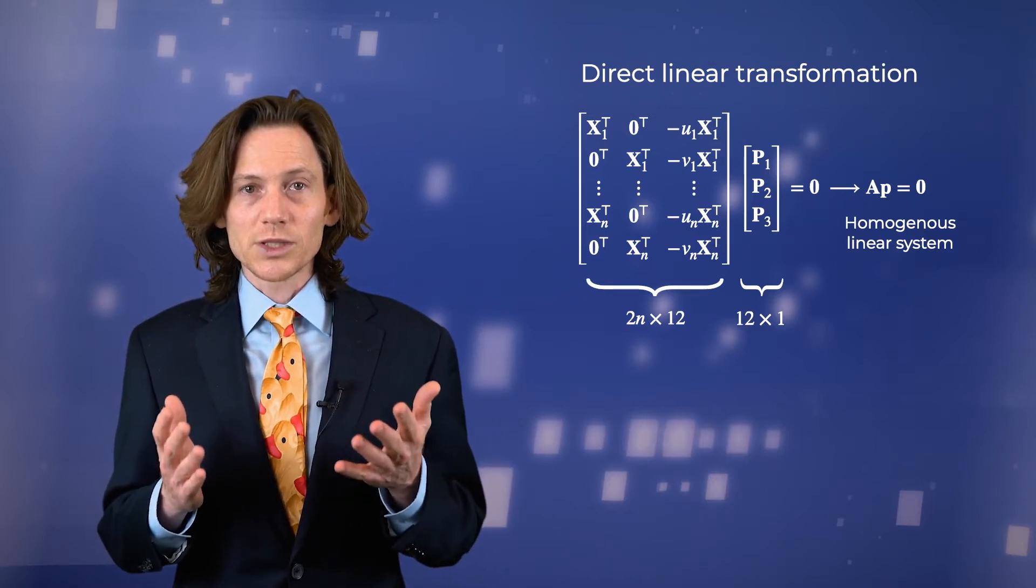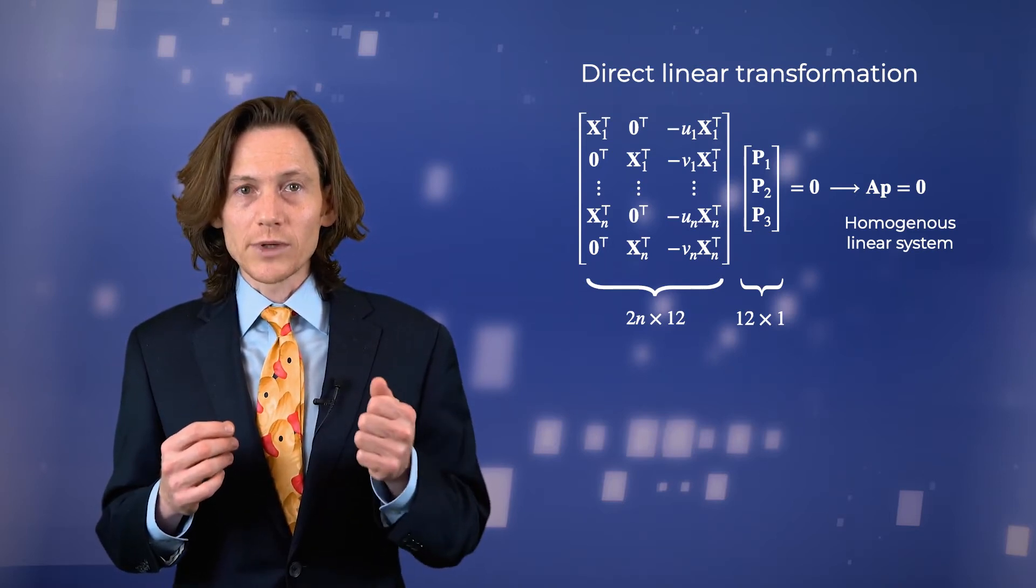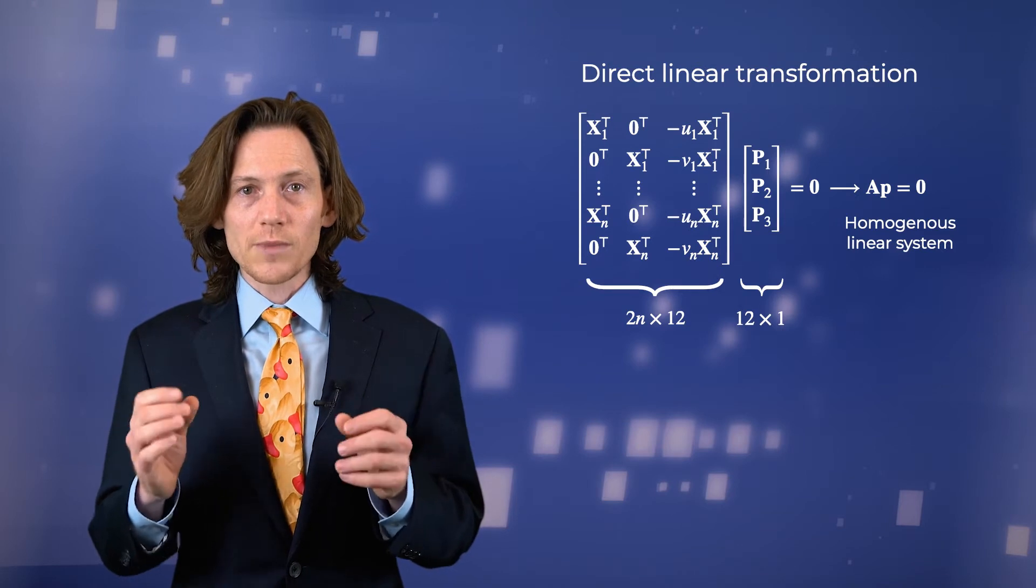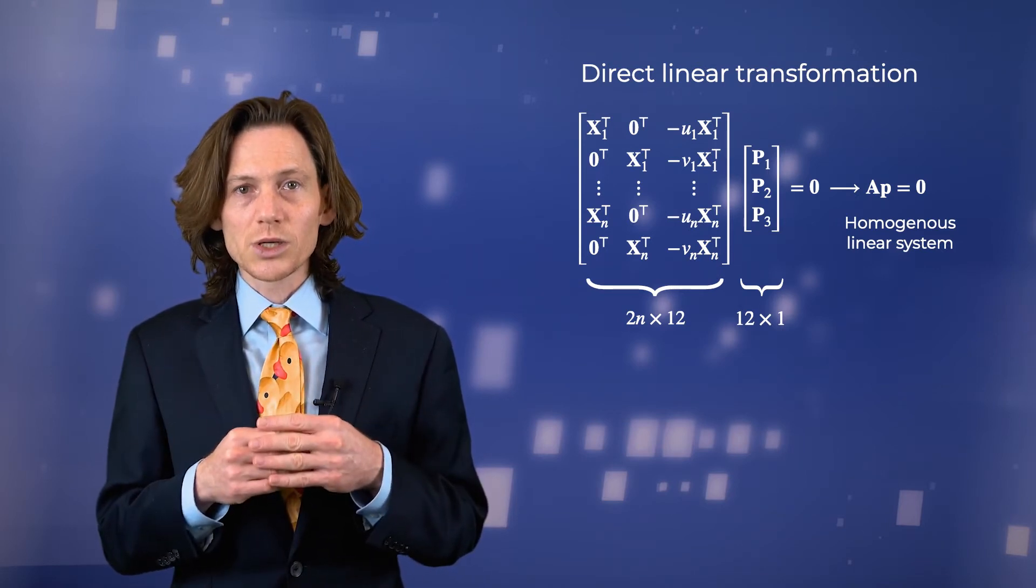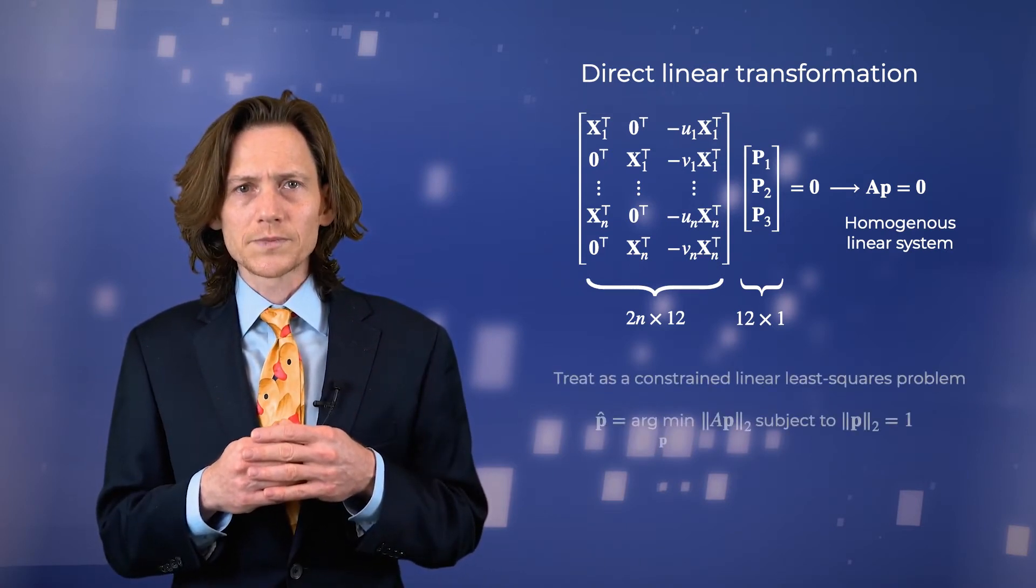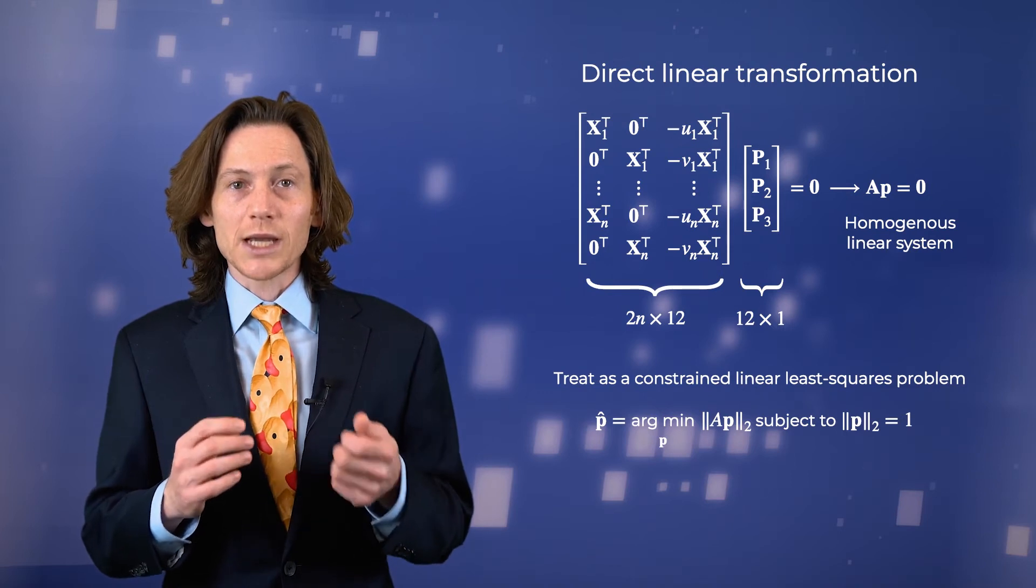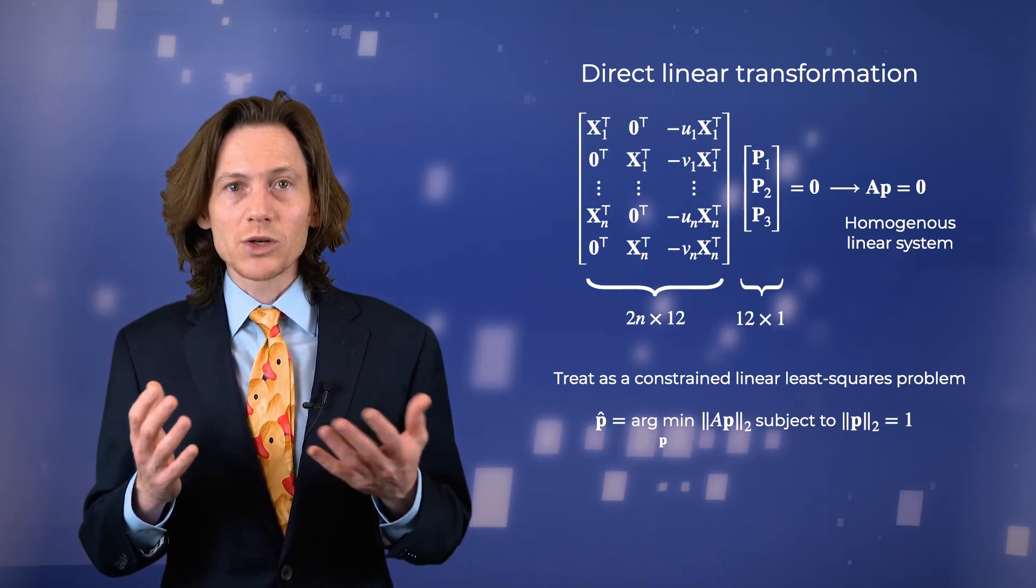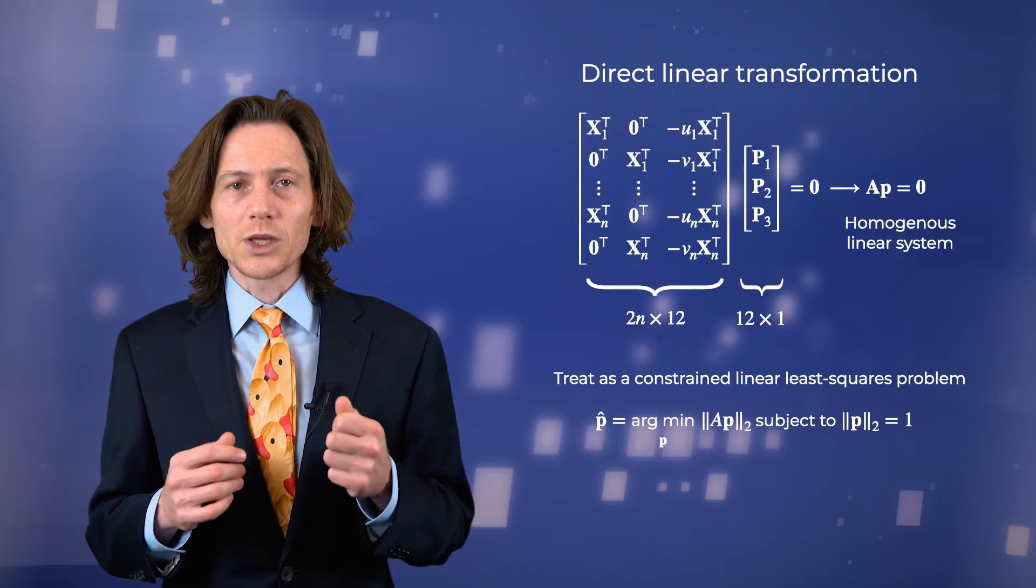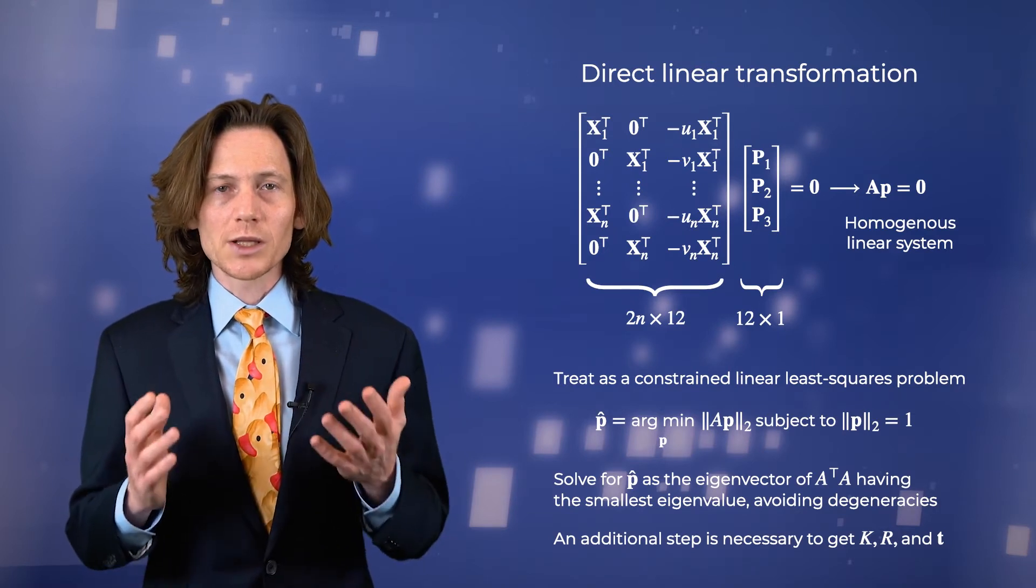Of course, the trivial solution of a twelve-dimensional zero vector is one solution, but that isn't terribly useful. One can show that the matrix A has rank 11, meaning that there exists a non-trivial solution defined by the one-dimensional null space of A. In theory, if there is no noise in the coordinates, we can solve for P exactly. However, there will always be errors in the coordinates of the projected points. Instead, we can solve for the vector P that minimizes some cost function. A natural choice is to minimize the norm of A times P. Because P is scale-invariant, we impose the constraint that P be a unit vector. The optimal solution is given by the eigenvector of the matrix A transpose A with the smallest eigenvalue.